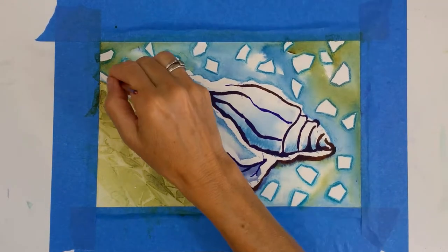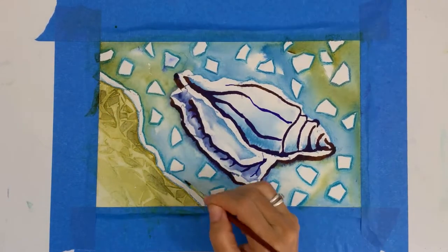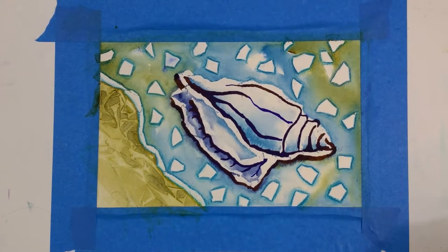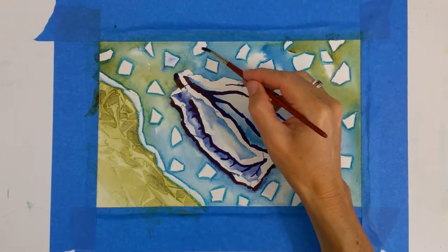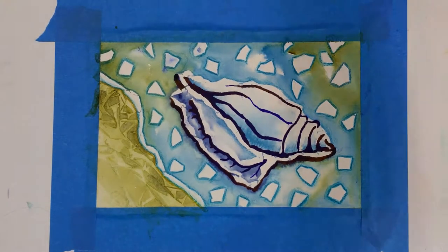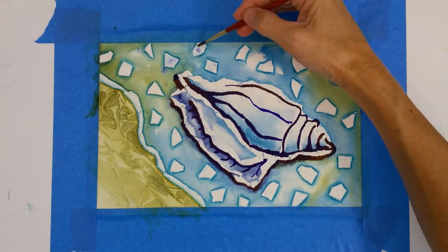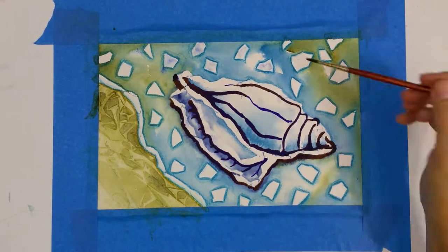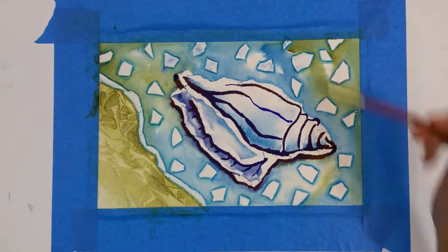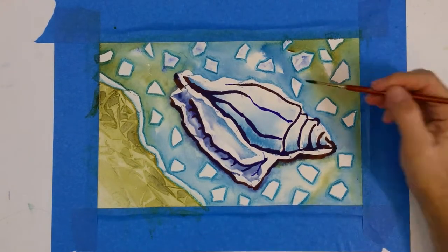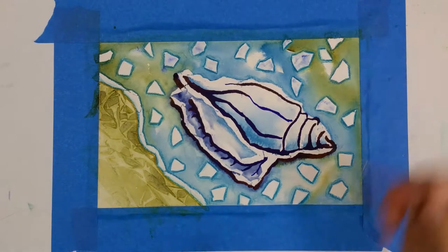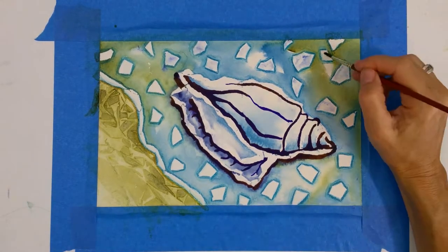And now I'm looking at these shapes and thinking, maybe they're overpowering my shell a little bit. And so I'm going to go in and I'm going to put a little water in each of those shapes and a little bit of that indigo or ultramarine color into the water just to push those shapes back a little bit within the composition so that they are somewhere between the foreground and the background.